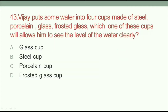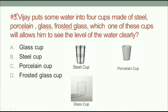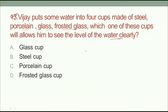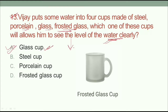Question number 13: we put some water into four cups made of steel, porcelain, glass, and frosted glass. Which one of these cups will allow you to see the level of the water clearly? Among these four, obviously in the glass cup you can see the water easily. Frosted glass is dhundla — faint — so the answer is clear glass.